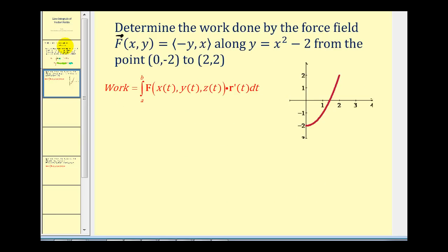Let's take a look at our first example. We want to determine the work done by the force field represented by the vector field F of x, y equals negative y, x along y equals x squared minus two from the point zero, negative two to the point two, two.